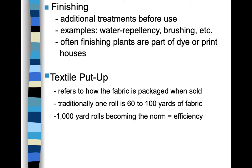Finishing is the final step in textile production. Additional treatments are added before the end use. For example, cotton fiber is spun into yarn, woven into fabric, bleached, dyed blue, printed with white polka dots, and then the very last step might be adding water repellency so it works as a raincoat. Other examples of finishes include UV blockers for bathing suits, shrink resistance, wrinkle resistance, and softening for a baby blanket. Finishes are there for function, not just aesthetics.